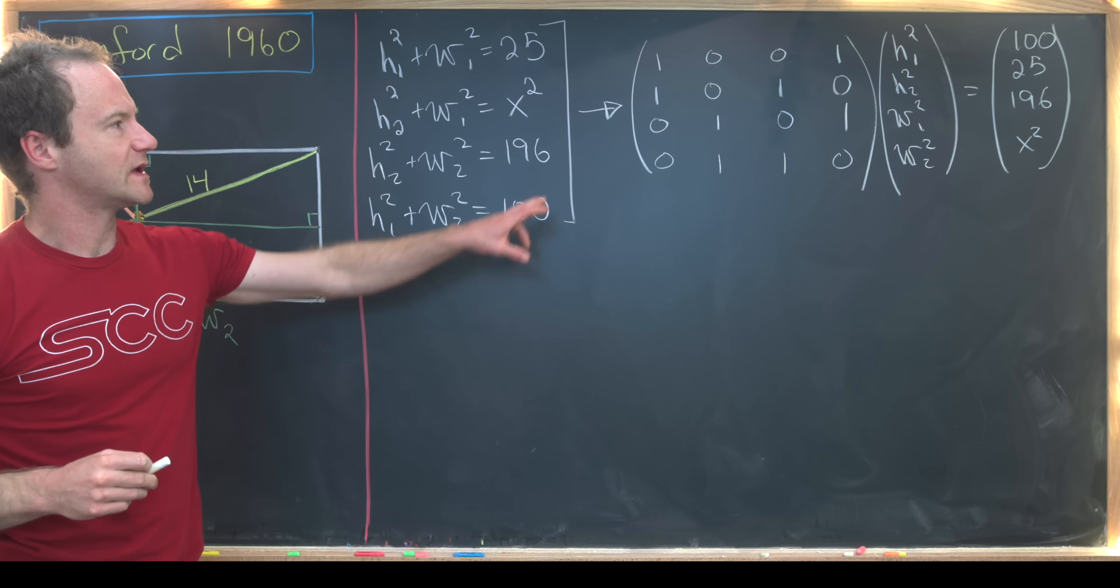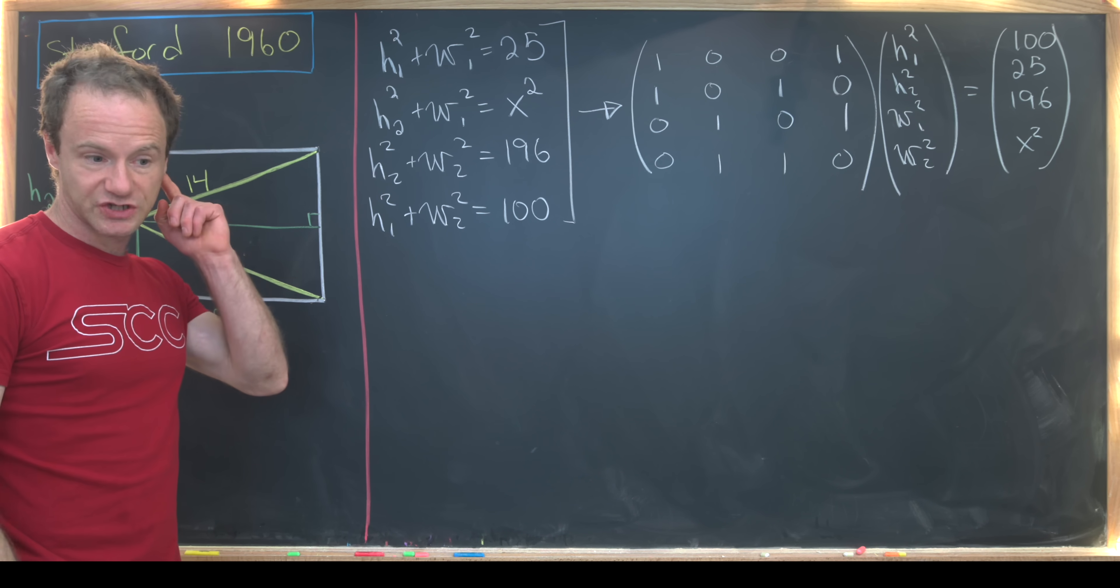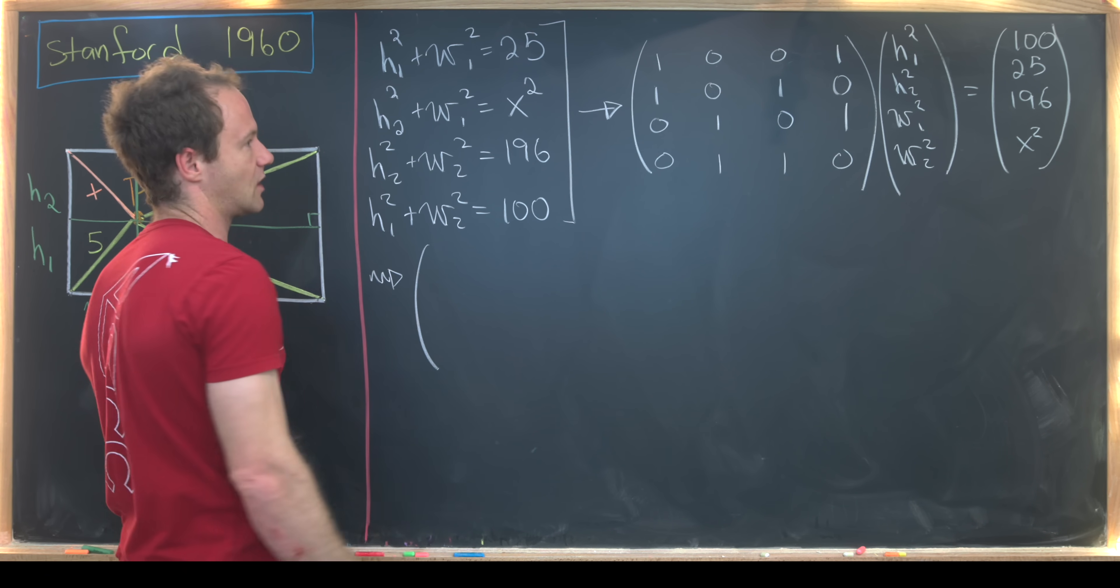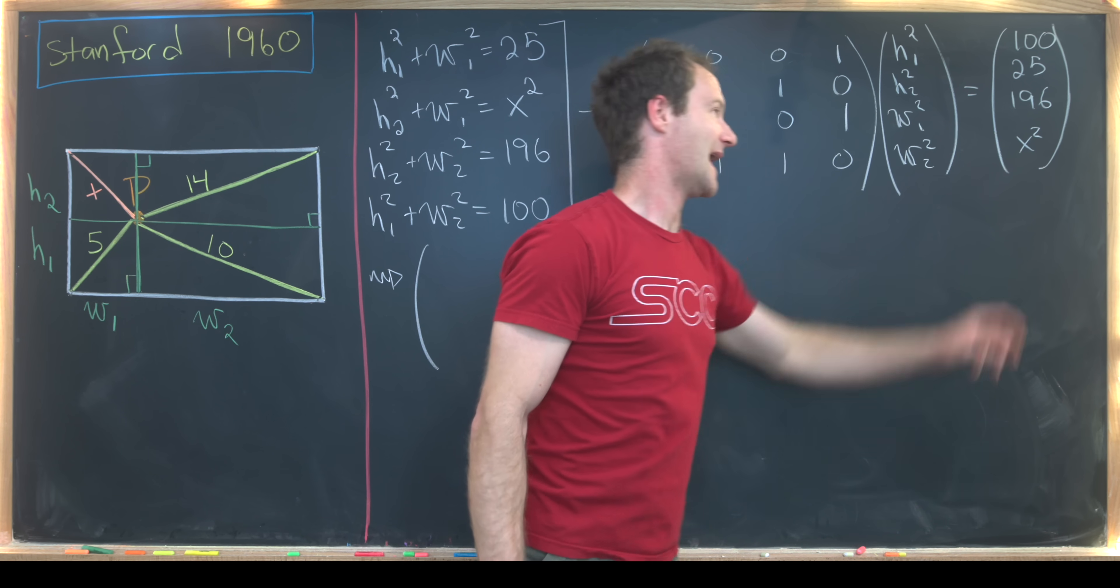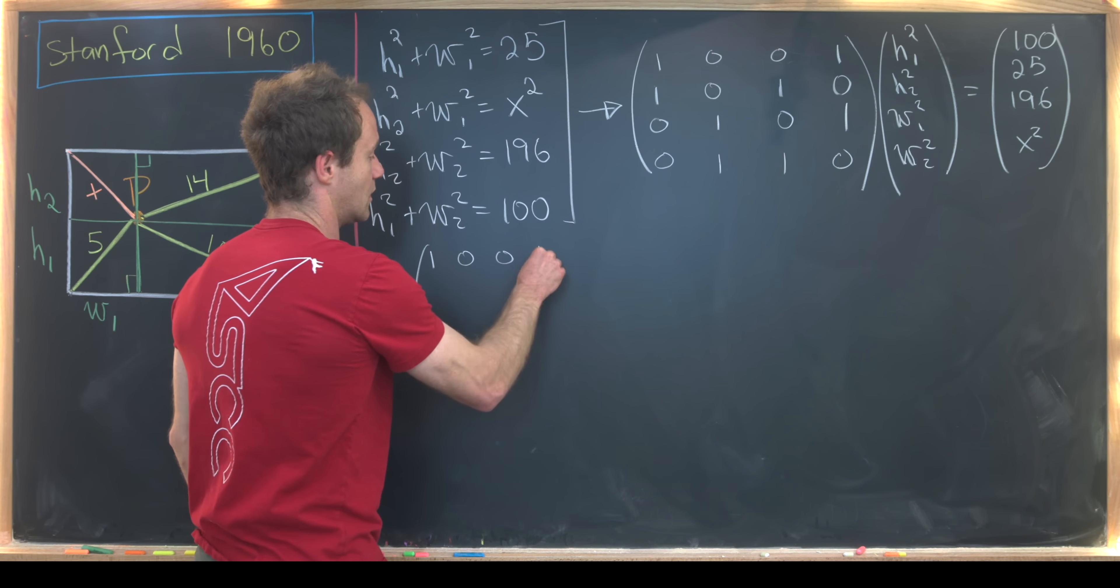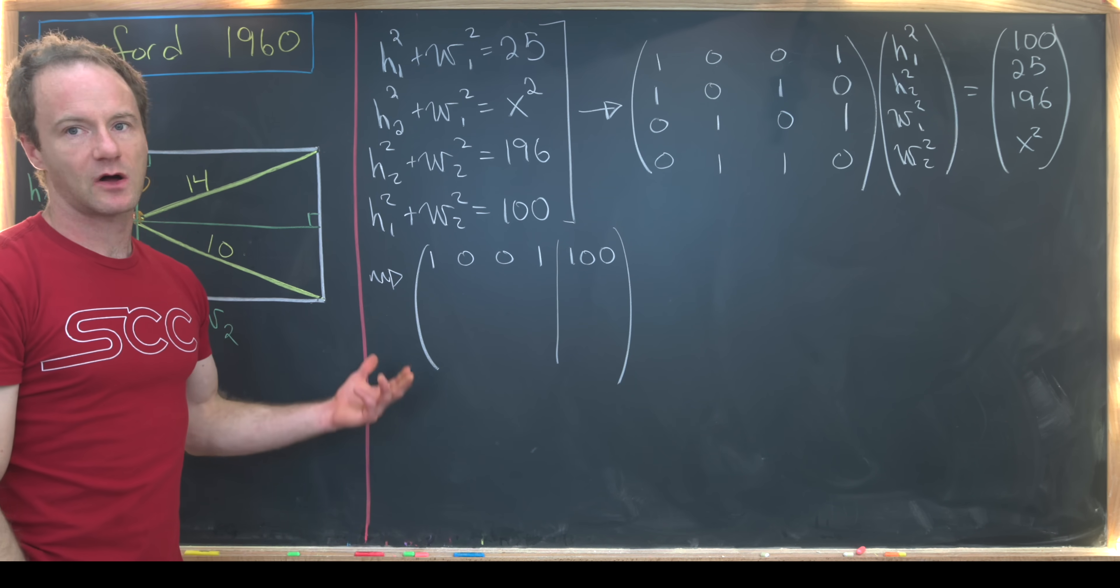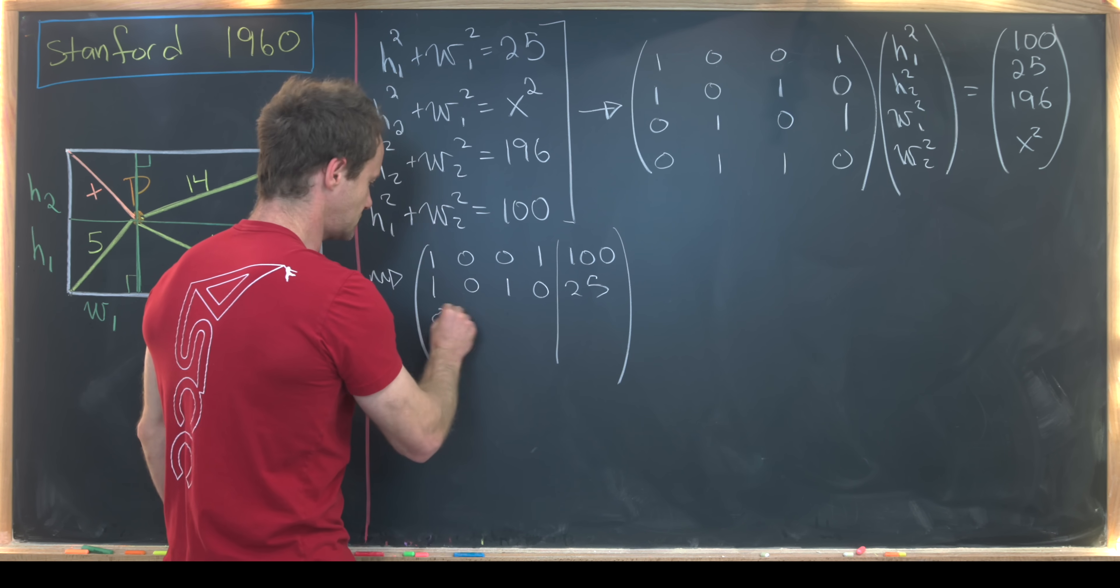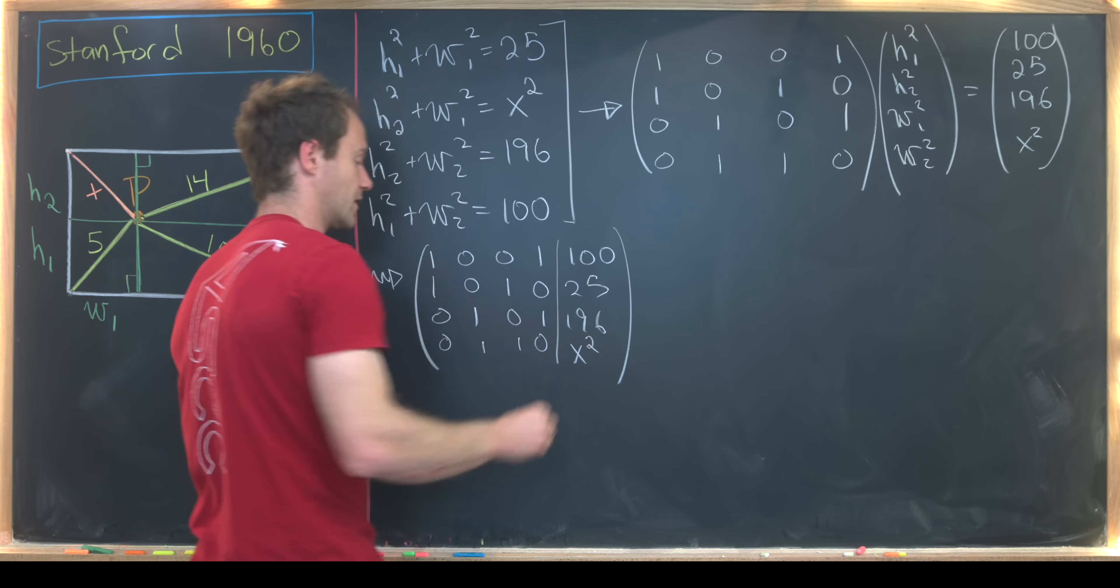Now we can take this matrix equation and rewrite it as an augmented matrix, which we can apply row reduction to in order to determine the solution set. So let's write this thing as an augmented matrix. Let's recall that that's just going to be the left bit will be this four by four matrix. And then the augmented bit will be an extra column, which will be our solutions column. So we'll have [1,0,0,1|100; 1,0,1,0|25; 0,1,0,1|196; 0,1,1,0|x²].